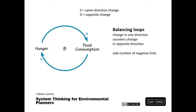In the balancing loop, on the other hand, a change in one direction counters the change in the opposite direction. When someone eats food, their hunger decreases.